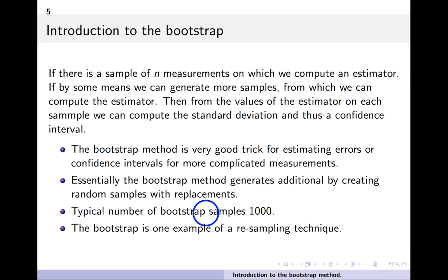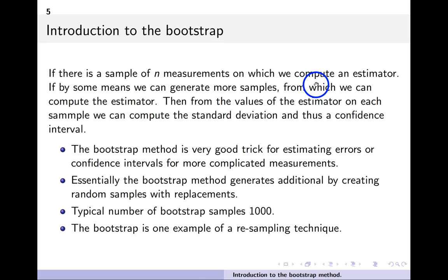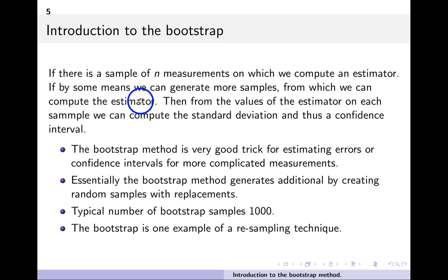One expensive approach: if you have n measurements and want statistics on an estimator like the median, you could just go find another seven people, measure their IQs, and compute the median again. Repeat that say 100 times, and you'll have a bunch of values for the median. From those you can draw a histogram and compute a standard deviation. Unfortunately, this is quite expensive in practice.